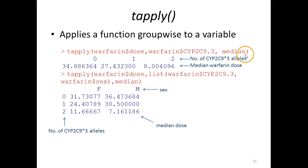In return, we get 0, 1, 2 - that's the number of CYP2C9 star 3 alleles. Then we get the median dose for those with 0 in this column, the median dose for those with 1 in this column, and so forth.